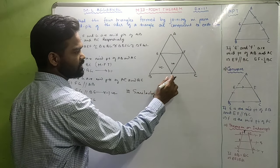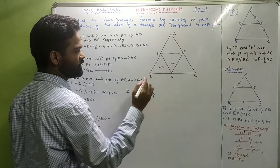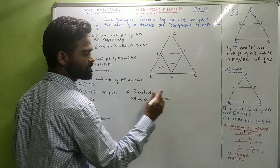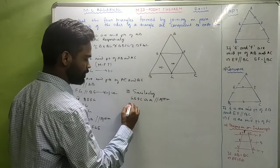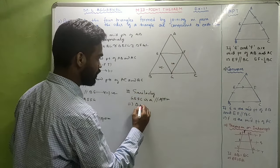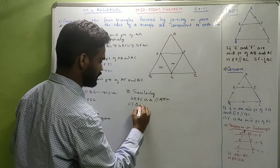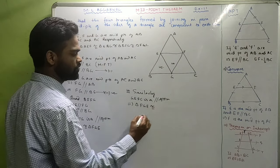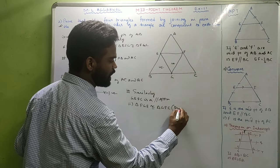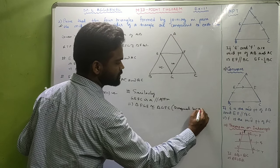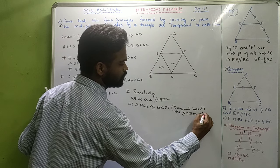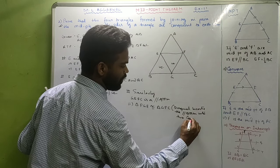Similarly, we can prove that quadrilateral GEFC is a parallelogram in the same manner, which means triangle GEF is congruent to triangle GFC. Because the diagonal bisects the parallelogram into two congruent triangles.